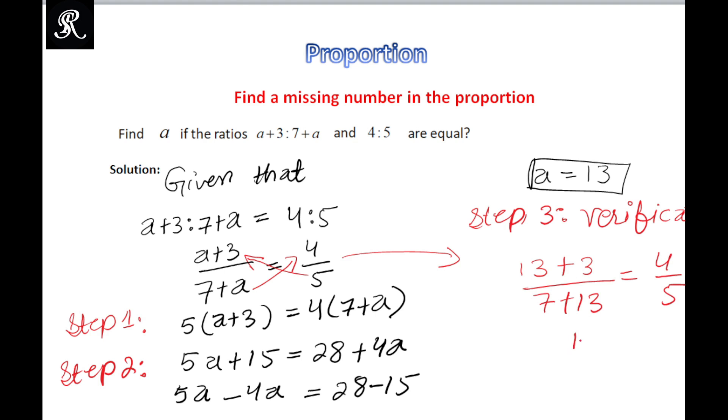16 upon 13+7, that is 20, equal to 4 upon 5. And here we can simplify this fraction to the simplest form, so that would be 4 times 4 and 5 times 4. We will get 4 upon 5 is equal to 4 upon 5.